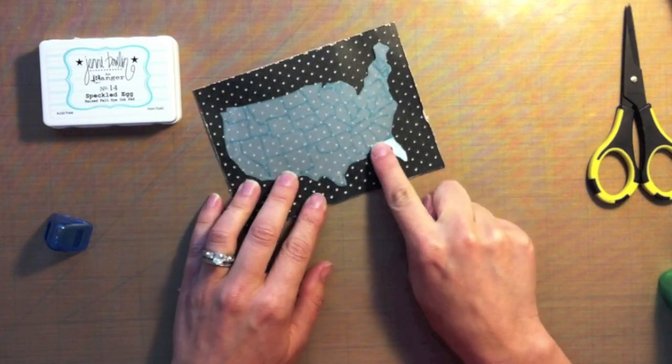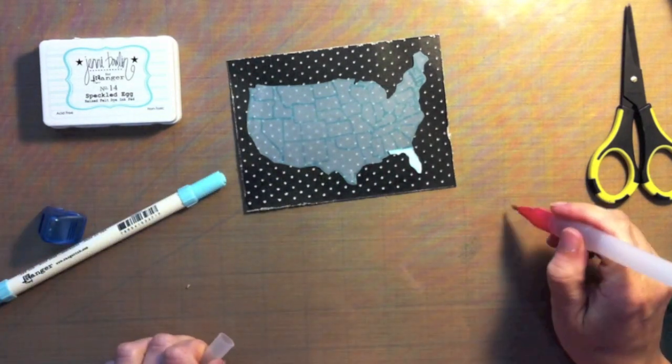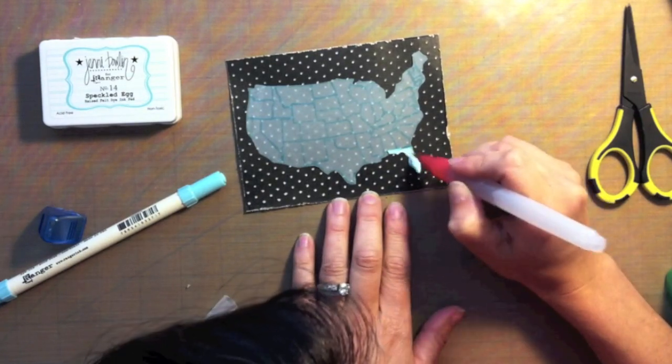So I'm going to take a Tim Holtz Distress marker and a water brush pen and just quickly color in some blue right there so it'll kind of match a little bit better.